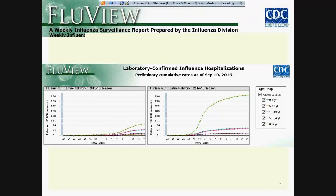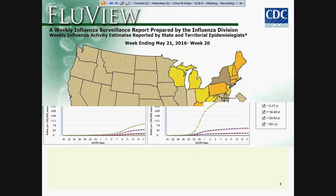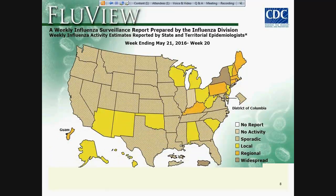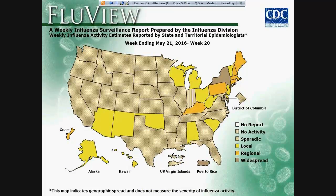Lastly, states report weekly to CDC the geographic spread of influenza in their state. Each week, the influenza coordinator uses statewide data to report West Virginia's activity as no activity, sporadic, local, regional, or widespread. This measures the geographic spread, but not the severity of influenza. Together, these five categories of influenza surveillance are designed to provide a national picture of influenza activity.